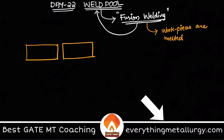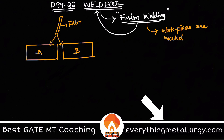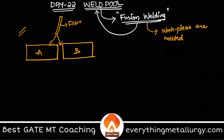Let's say we have two different work pieces, A and B. One of the most famous welding processes is arc welding, where you use some kind of filler material. The filler material hits the work pieces and creates heat energy. Welding is essentially physical and chemical joining — coalescence — with application of heat or pressure. Here we are applying heat by creating an arc between the filler material and the work pieces.